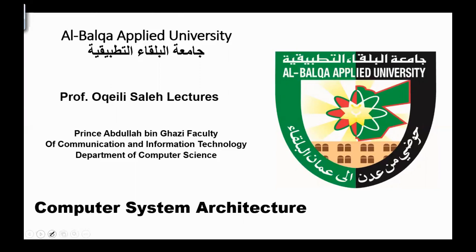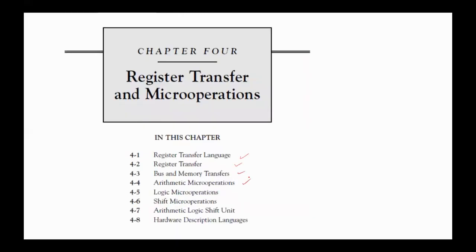Hello, everyone. Today we continue with the Computer System Architecture course. In the last meeting, we discussed the first four sections of Chapter 4. Today we move to Section 4.5, Logic Micro Operations.